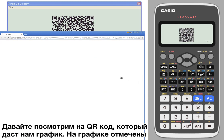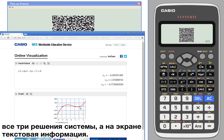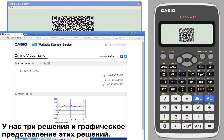And the QR code will give us a graph that has all three zeros and the screen that gives us all three zeros all at once. Here are three solutions and the graphical representation of that same thing.